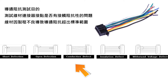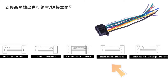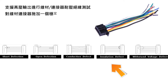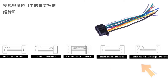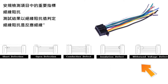Process defects can cause conduction resistance to exceed the standard range. Withstand voltage and insulation defects — such as insulation resistance defects — may cause the DUT to be penetrated or produce leakage current under high voltage. Some high-precision products for automotive and military applications cannot accept any arc under high voltage.